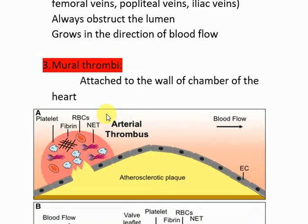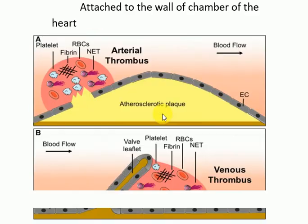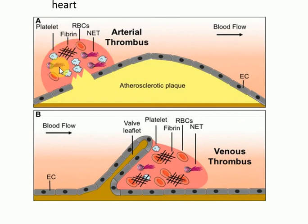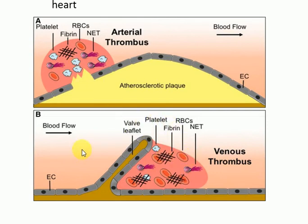Mural thrombi are those attached to the wall of a chamber of the heart. This image shows the arterial thrombus and the venous thrombus. The arterial thrombus shows platelets, fibrin, and RBCs, and grows opposite to the direction of blood flow (right to left). The venous thrombus forms in the direction of blood flow, with more RBCs entrapped in the fibrin mesh compared to the arterial thrombus.